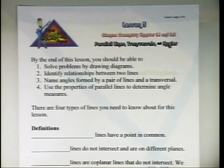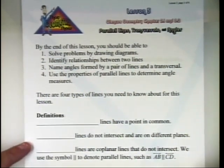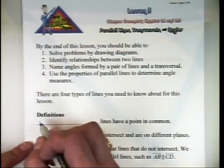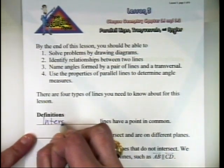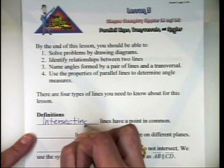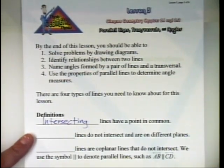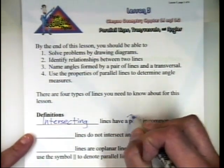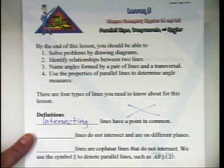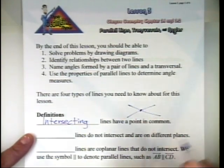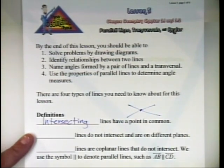There are four types of lines we need to know about for this lesson. Number one: intersecting lines. Intersecting lines are two lines that cross, and they have one point in common. For example, there's two lines — they intersect — and this is the single point they have in common.